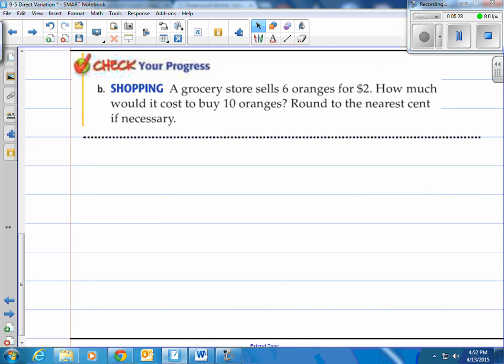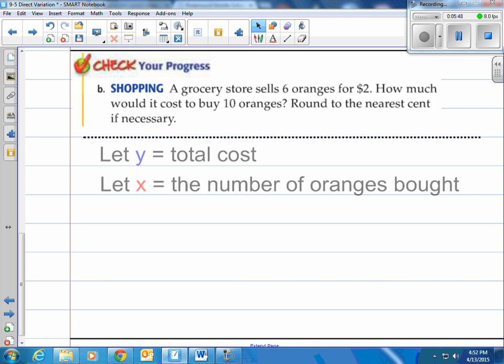Alright. You give it a shot. Pause the video. Try this one. Come on back, see how you do. A grocery store sells six oranges for $2. How much would it cost to buy 10 oranges? Now I'm going to use the direct variation method using the y equals kx. Again you can use proportions. In this case they want us to try the direct variation. So I'm going to let y equal the total cost to buy oranges and x be the number of oranges bought.